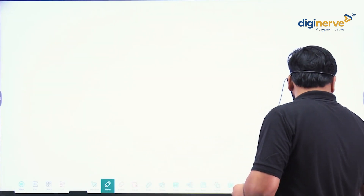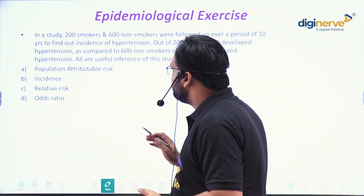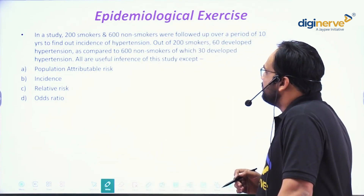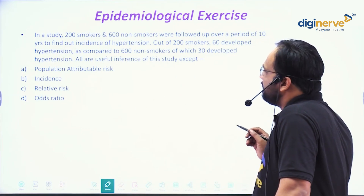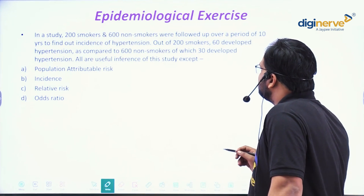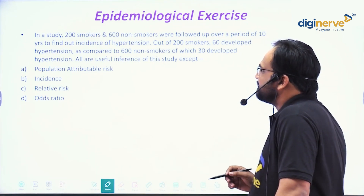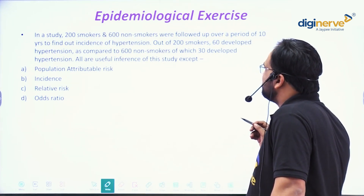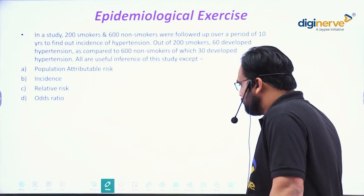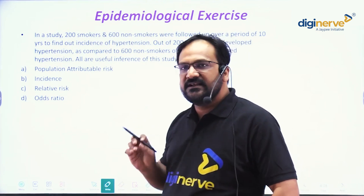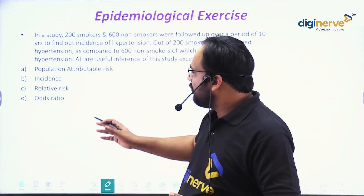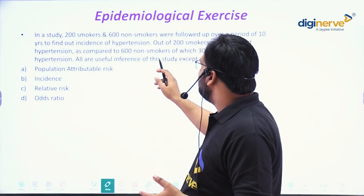Today we will solve an exercise. The question is: In a study, 200 smokers and 600 non-smokers were followed up over a period of 10 years to find out the incidence of hypertension. Out of 200 smokers, 60 developed hypertension, as compared to 600 non-smokers of which 30 developed hypertension. All are useful in the findings of this study except — so they are asking which among the options is not applicable.